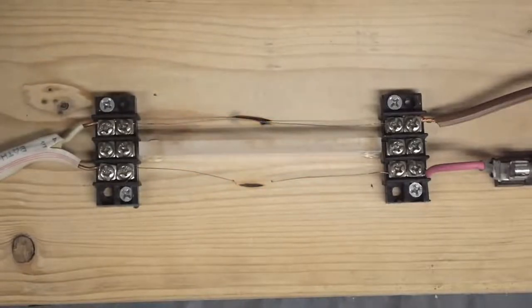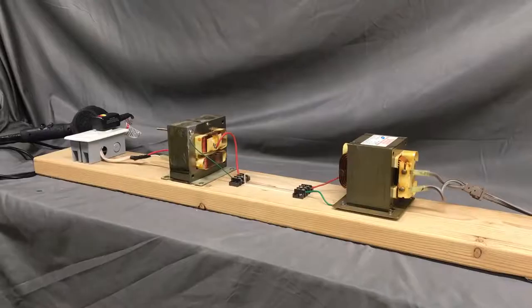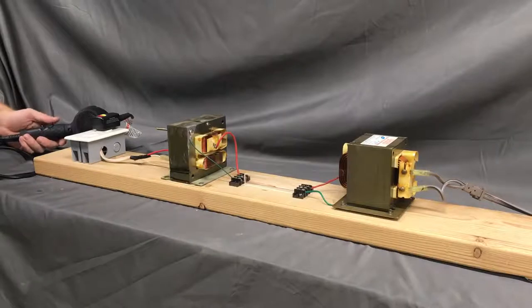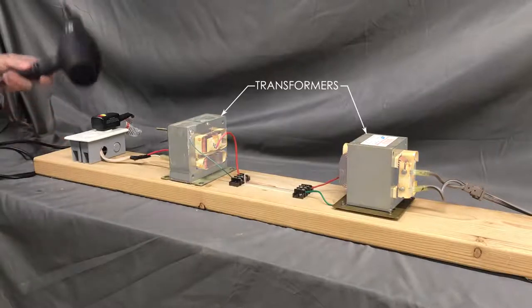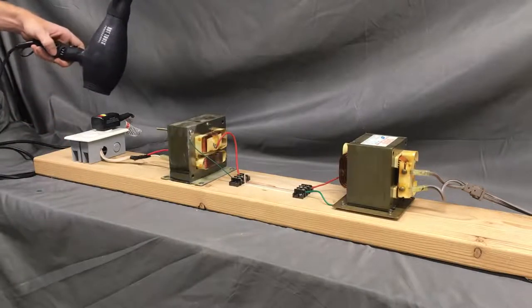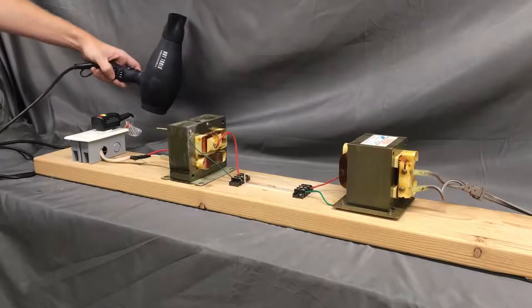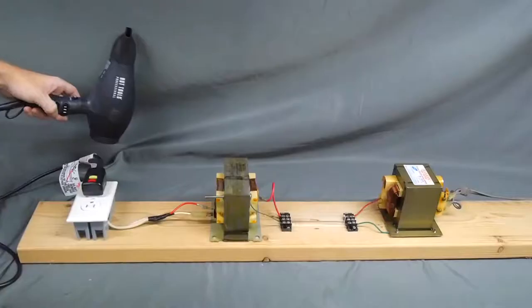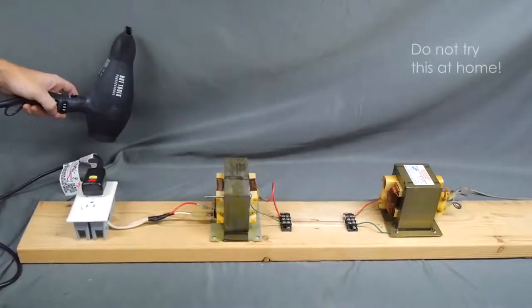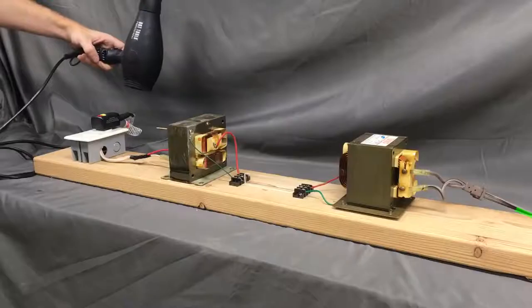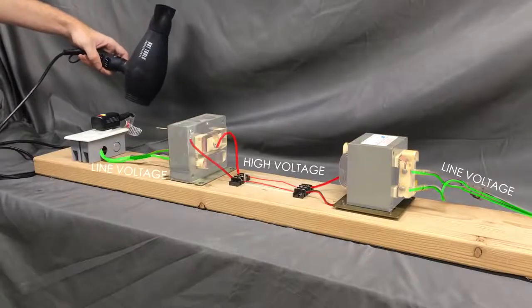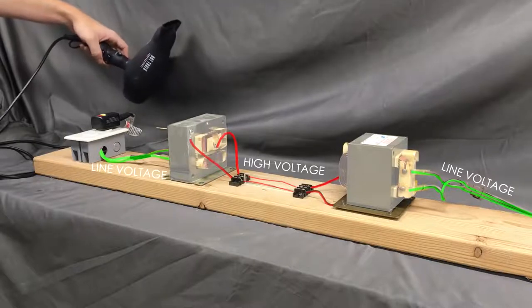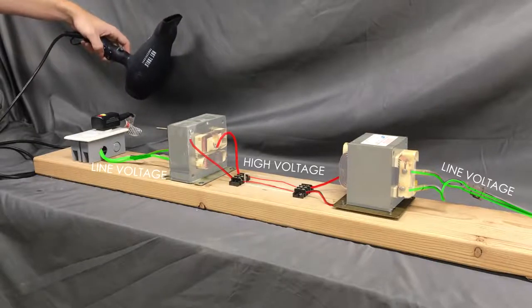That heat represents wasted energy, but if I first boost the voltage up using this transformer and then step it back down on the other side of the thin conductors, they have no problem carrying the power required to run the dryer. We've essentially swapped high current for high voltage, making the conductors more efficient at carrying power.